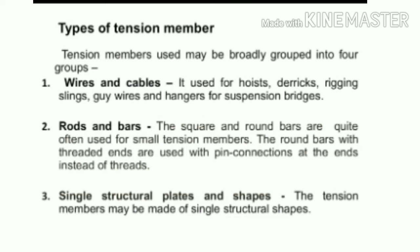The type of structure and method of end connections determine the type of tension member. In structural steel construction, tension members may be broadly grouped into four groups. The first is wires and cables, which are used for hoists, derricks, rigging slings, guy wires, and hangers for suspension bridges. The second is rods and bars — square and round bars are quite often used for small tension members, and round bars with threaded ends are used with pin connections.